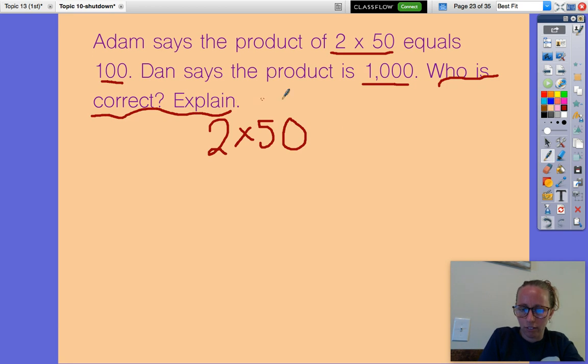Why don't we just do it ourselves? I think the easiest strategy would be using our base fact. What is two times five? Two times five is 10. We have to be super careful though, because even though two times five is 10 which ends in a zero, we can't forget about this zero right here. We need to remember to add our zero. So our answer is 100. Who said 100? Was it Adam or was it Dan?